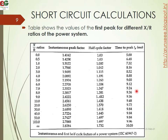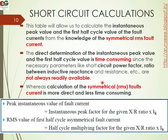The table shows the values of the first peak for different X/R ratios of the power system, including the instantaneous peak factor, half cycle factor, and time to peak value. The first peak factor for X/R = 1 is 1.263. This table allows calculation of the instantaneous peak value and the first half cycle value of the fault current from the symmetrical RMS fault current. Direct determination of these values is time consuming.